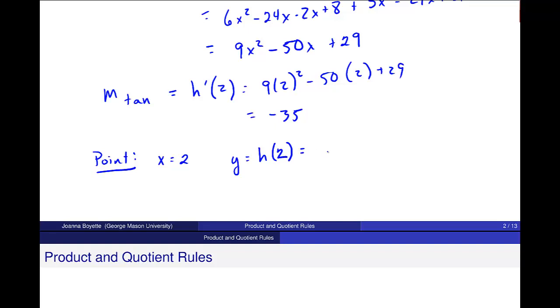So my original function h is this here. Let's see, it was 3x minus 1 and x squared minus 8x plus 7. And so I'll plug in the 2, 3 times 2 minus 1, 2 squared minus 8 times 2 plus 7. So let's see, 3 times 2 minus 1 should give me a 5, and 4 minus 16 plus 7, negative 5. So this is negative 25.